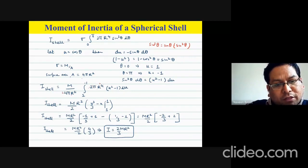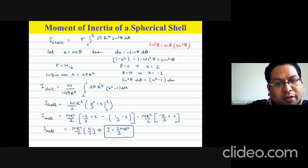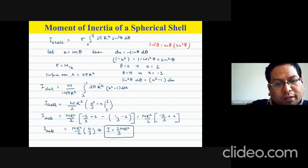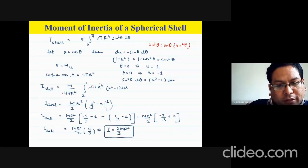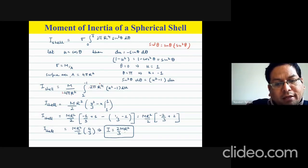The surface area of a spherical shell is 4πR², so σ = m/(4πR²). Plugging that in, with 2π remaining and R⁴, the integral of (u² − 1) du is u³/3 − u. After canceling 2π with 4π and R² with R⁴, we get m/2 × R² left. Solving with limits gives I of the shell = 2/3 mR².